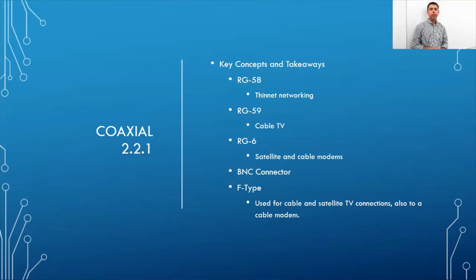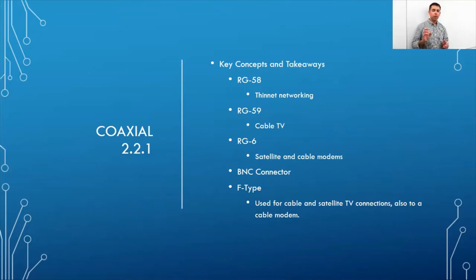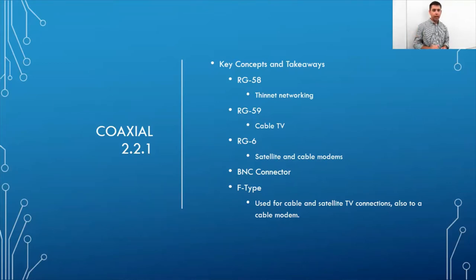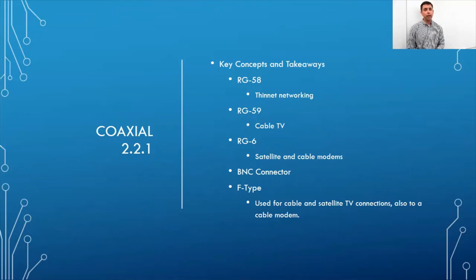Coaxial cable types include RG58 for thinnet networking, RG59 for cable TV, and RG6 for satellite and cable modems. Connector types are the BNC connector, which is fairly common, and the F-type with a screw end used for cable and satellite TV. Coax is rarely used for networking anymore — you'll mainly see it at a demarc point for satellite or cable connections.